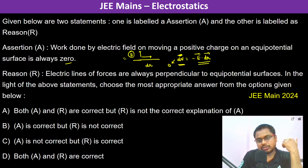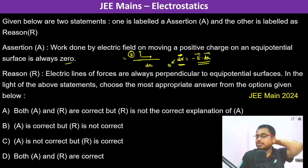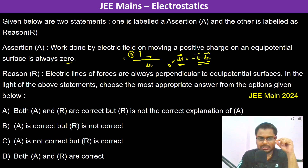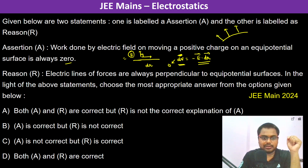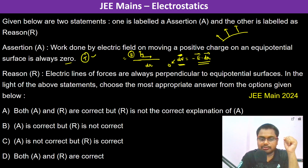Since both dr and E are non-zero, their dot product being zero means the angle between E and dr must be 90 degrees. Therefore, for an equipotential surface, electric field lines are always perpendicular to the surface — whether pointing outward or inward. So the Reason is also true.